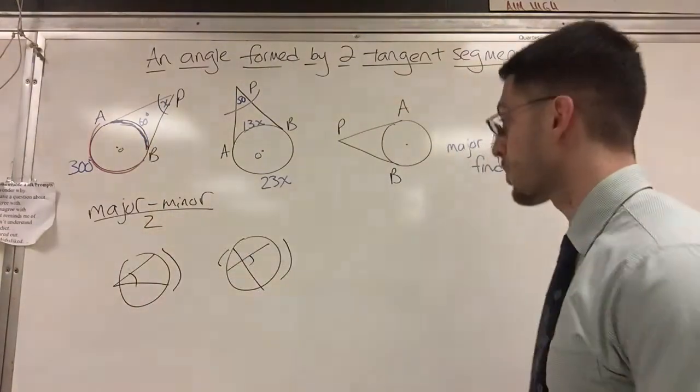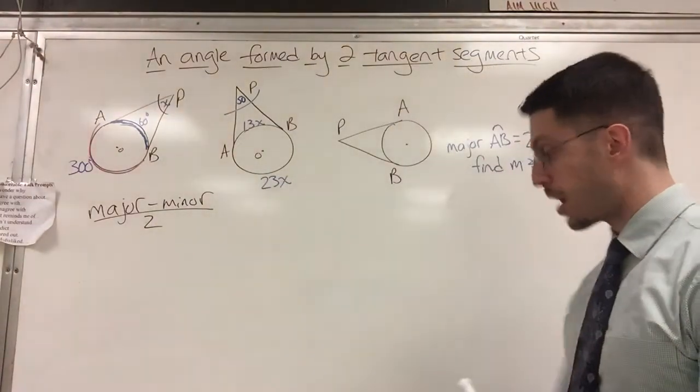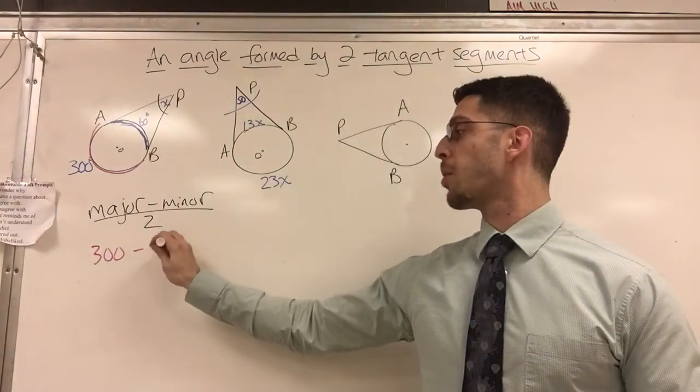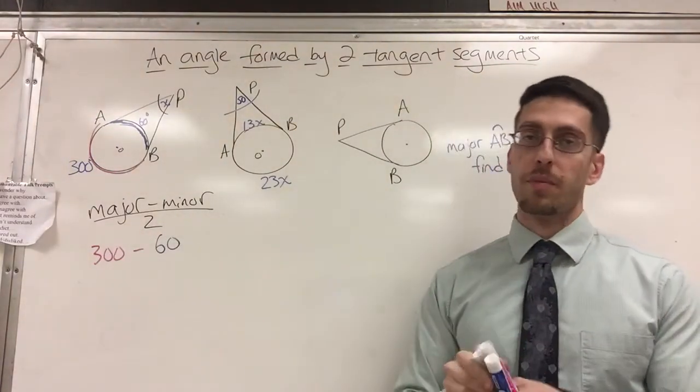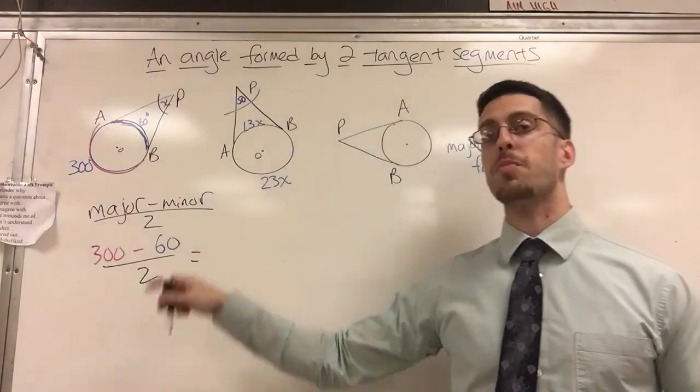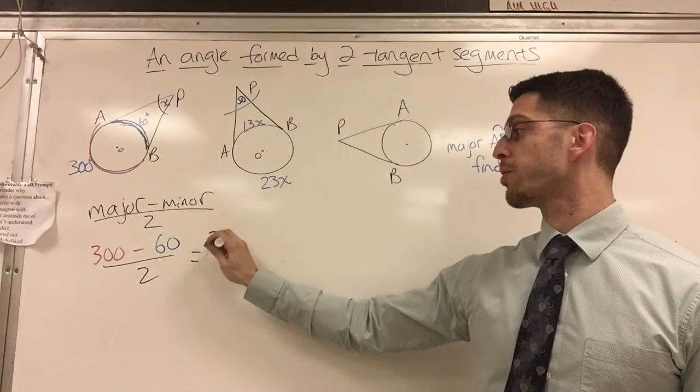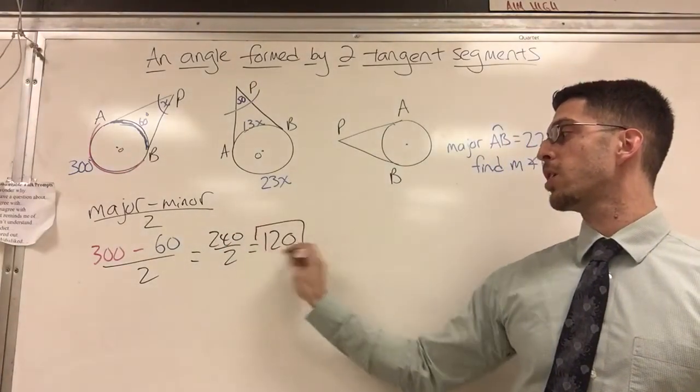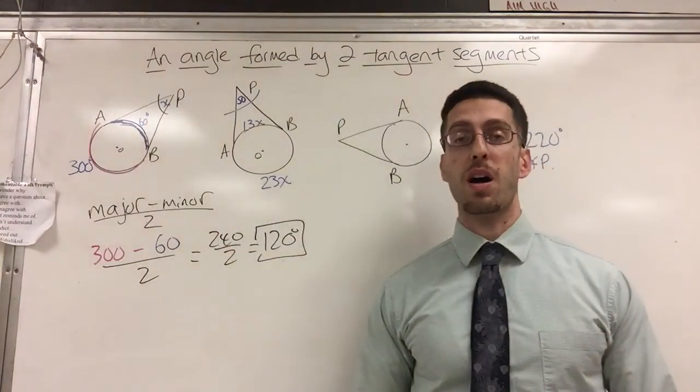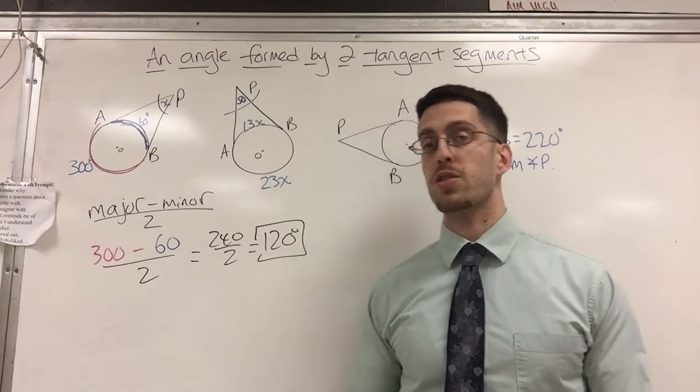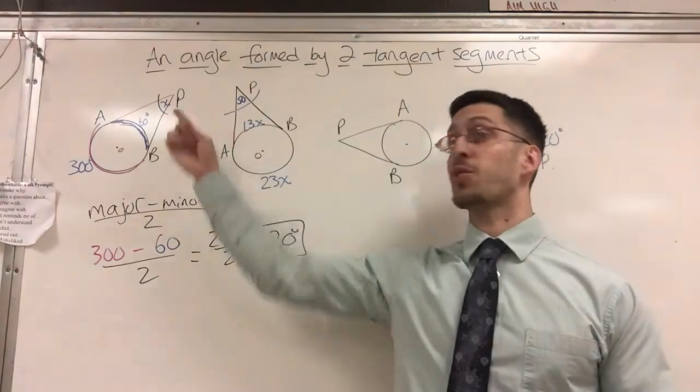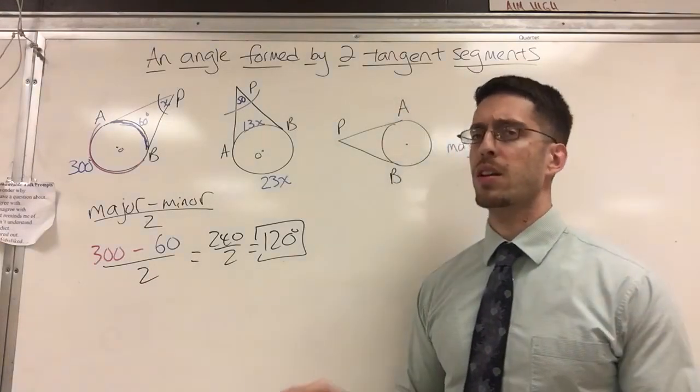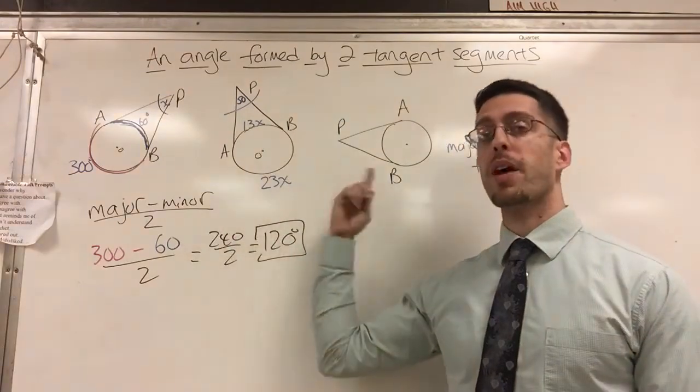So let's look up here. We got 300 is my major arc, and 60 is my minor arc, and I'm going to take half of that, or divide that by 2. So 300 minus 60 is 240. 240 divided by 2 is 120 degrees. And that is my measure, and that's it. It's a very simple process. Just plug in numbers in the formula. Obviously, it's not drawn to scale because that looks acute, and my answer is obtuse. Not drawn to scale. You didn't see me use a scale. No scale. Simple as that. And we're going to apply that to the next two.